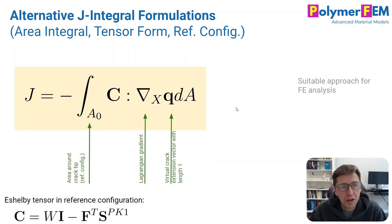You can also write the J-integral instead of a path integral as an area integral and here's a short version of that. This is an area integral in the reference configuration. C is again the Eshelby tensor and then we have the Lagrangian gradient of a virtual crack extension. So if you apply this you will be able to come up with a good solution to the J-integral. This is suitable for finite element simulations.